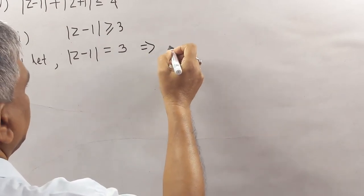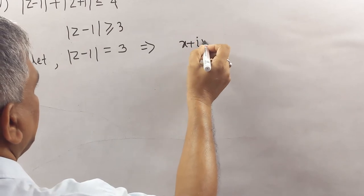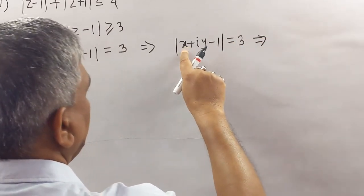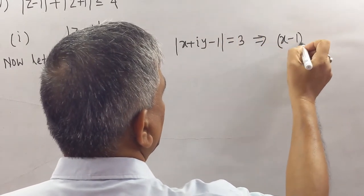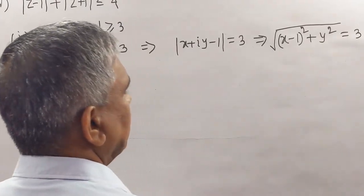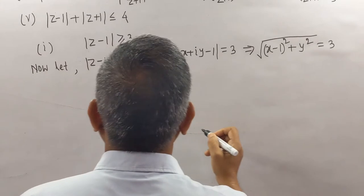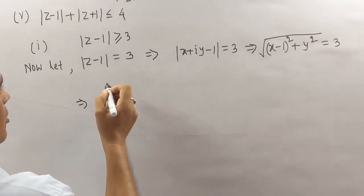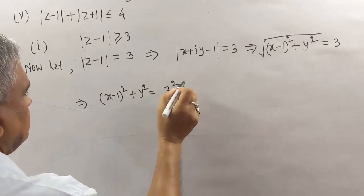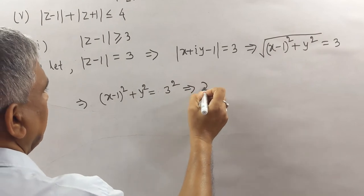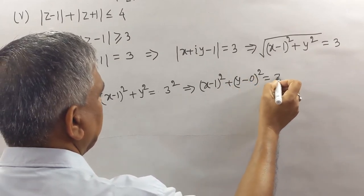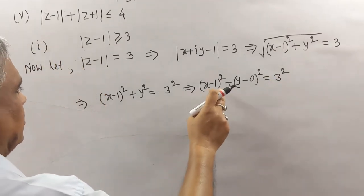This implies that z means x + iy, so |x + iy − 1| = 3. This means √((x−1)² + y²) = 3. This implies that (x−1)² + y² = 3² = 9. This implies (x−1)² + (y−0)² = 3², which is the equation of a circle.